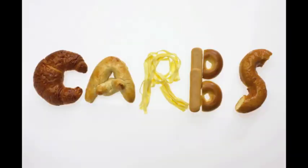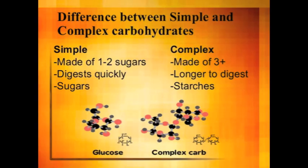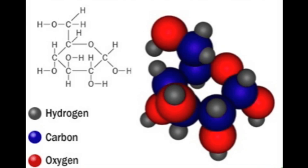First, carbohydrates. We need these for energy. Sugars burn fast, but starches burn slowly. What do we call these molecules in biology?